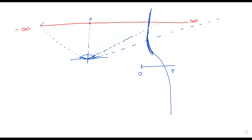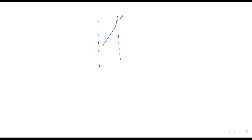You should know more or less what the tangent looks like — that shape repeated over and over again — and that the distance between asymptotes is pi. The tangent is periodic, just like the sine and the cosine, the same shape repeated. But unlike the sine and the cosine, the period of the tangent is pi, not two pi.